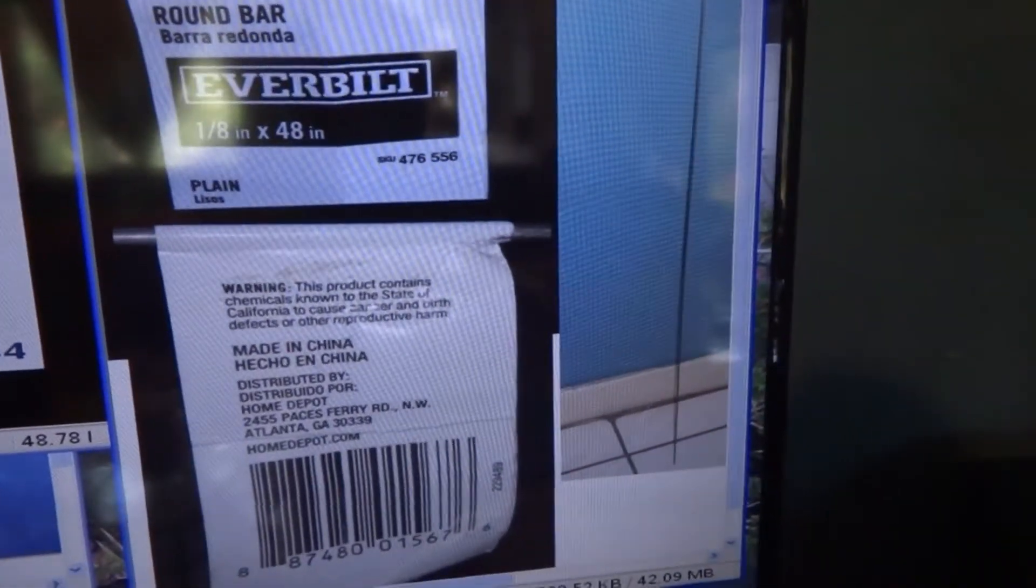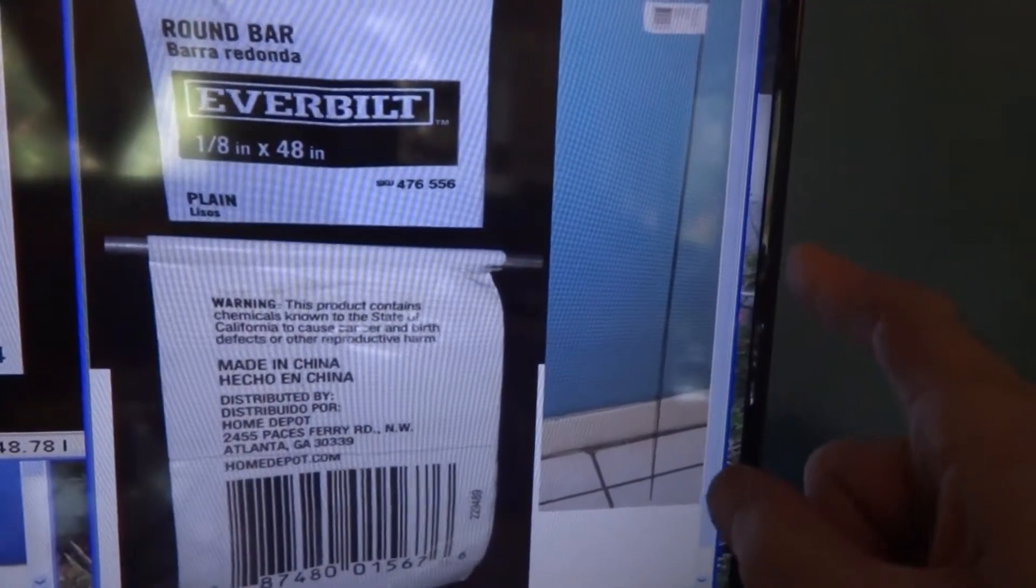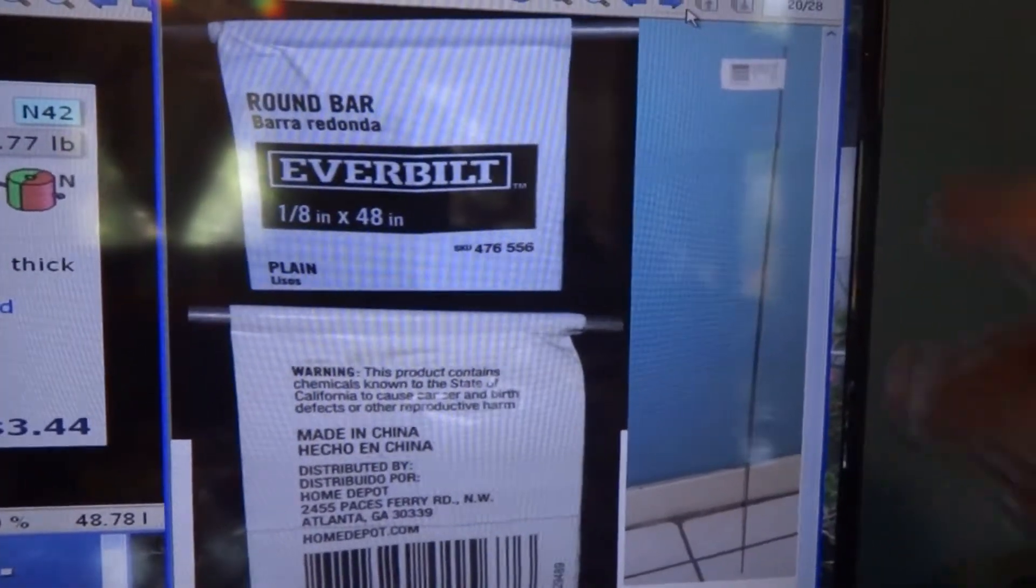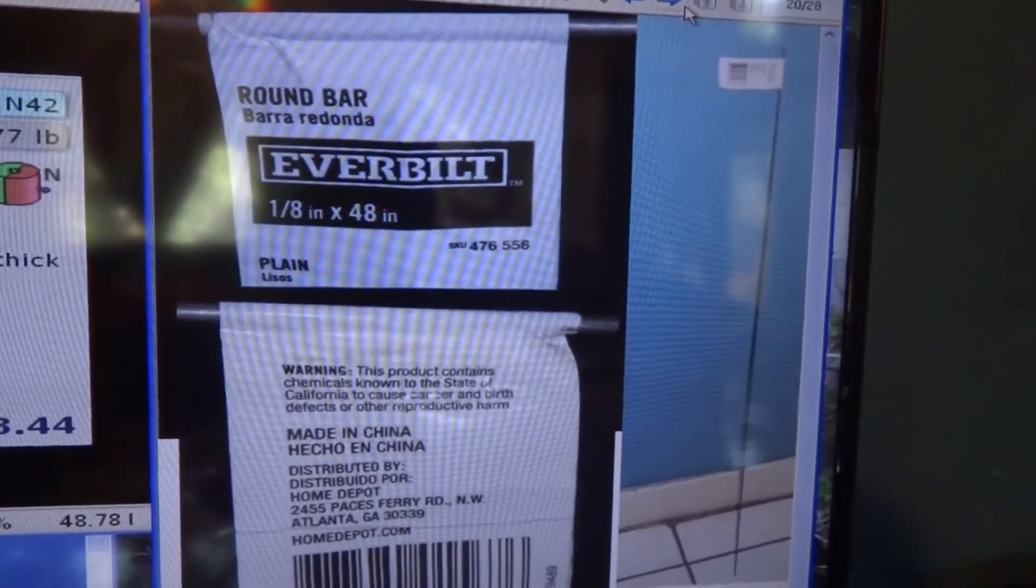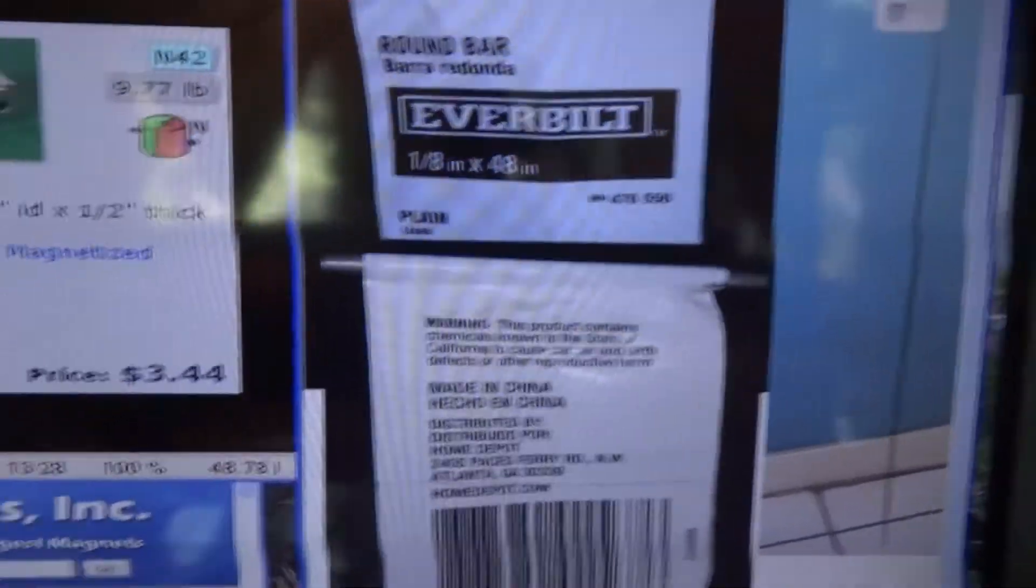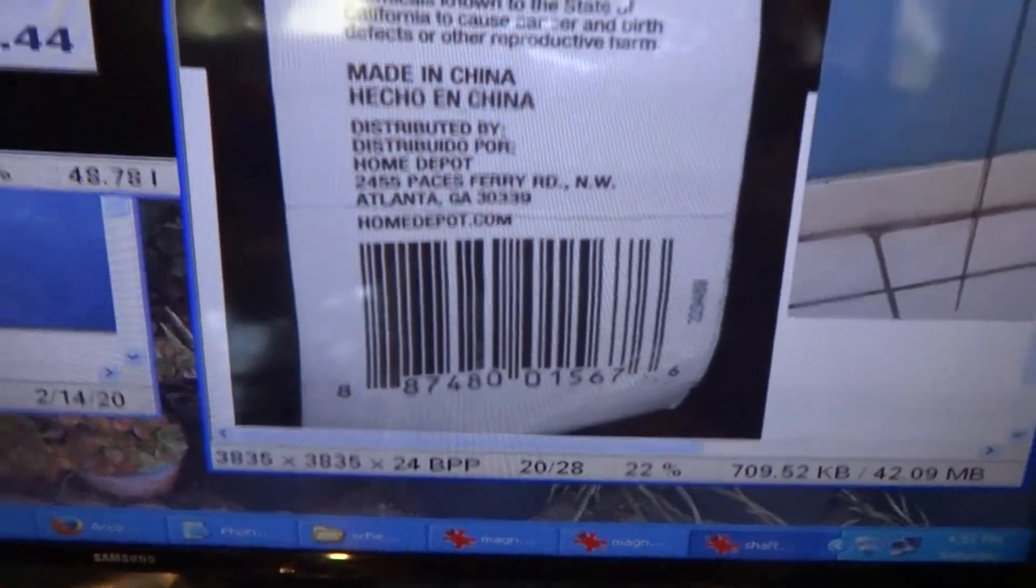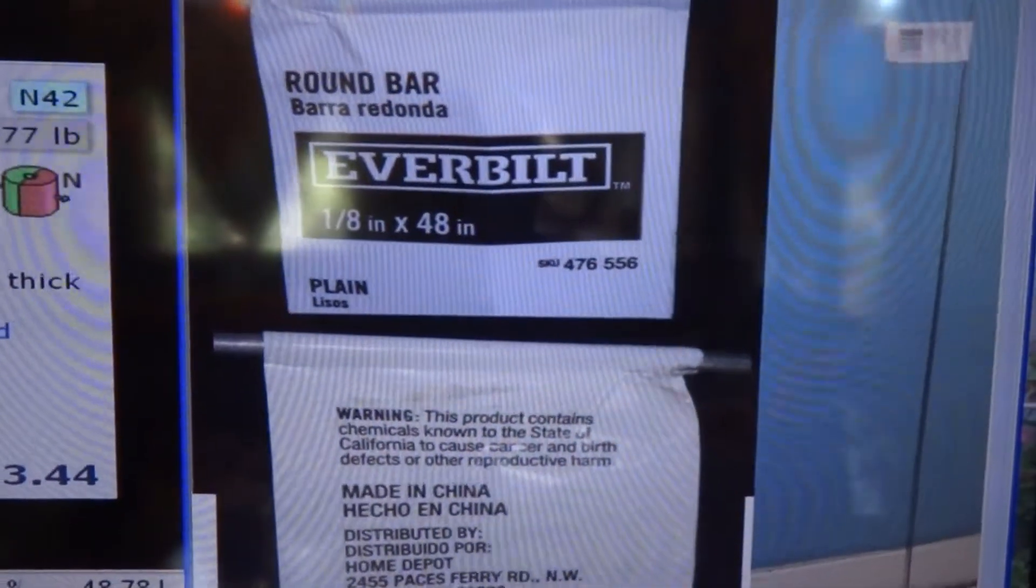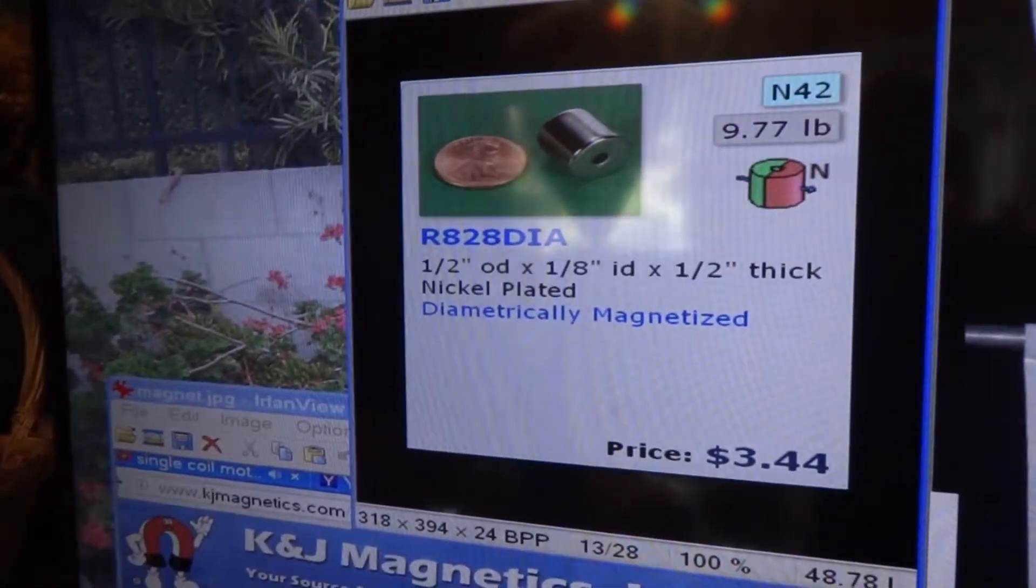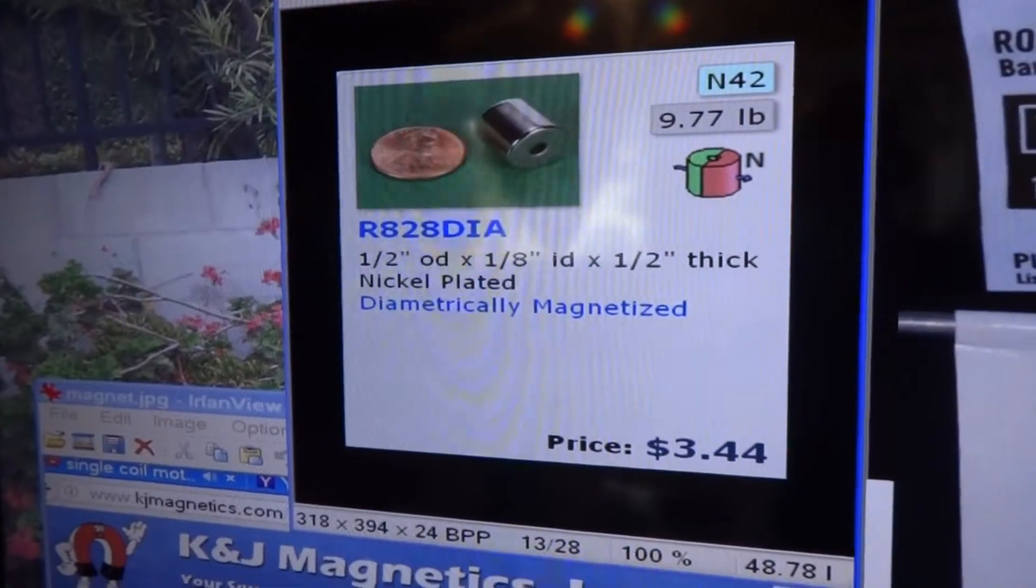Also for a shaft today, we're using this Home Depot round bar. It's 1/8 inch and 48 inches long so we can cut it in pieces and make our shafts and other things we're going to need to do with it. Let me just zoom in a little bit on the barcode and on their SKU number there. Also the magnet is a R828 DIA. That's the one you want to order.